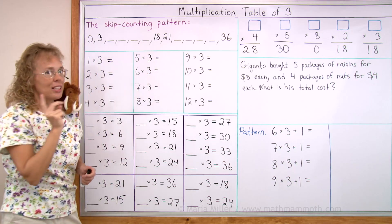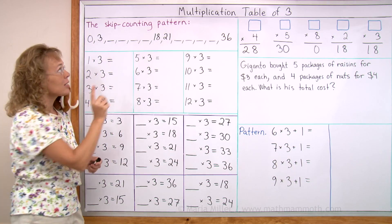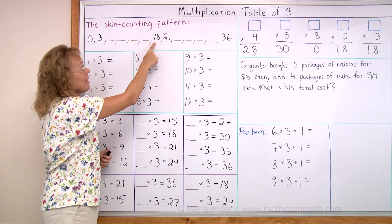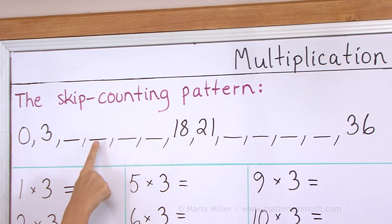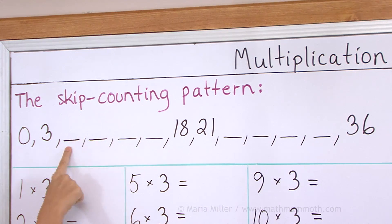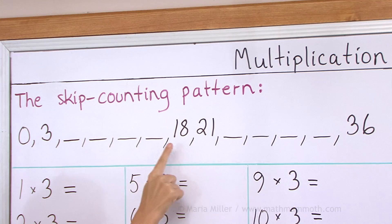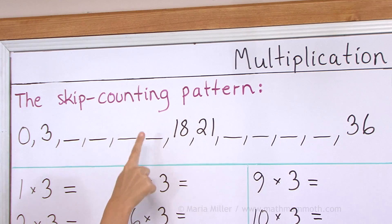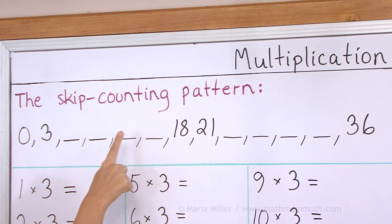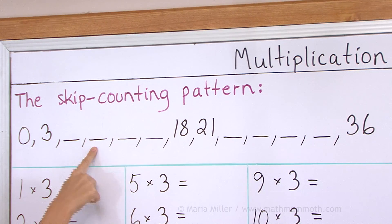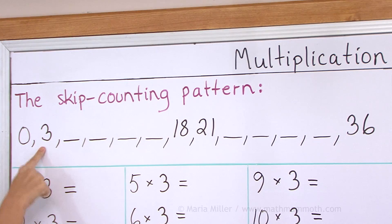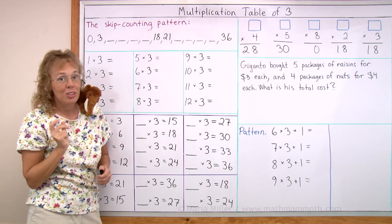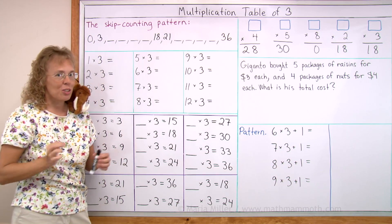And can you say it backwards starting with 18, 15, 12, 9, 6, 3, 0? Your turn. 18... If you need to, pause the video, go backwards and practice that again.